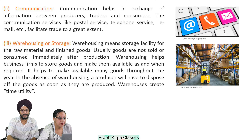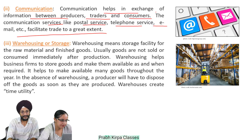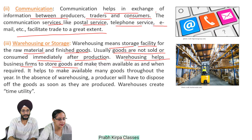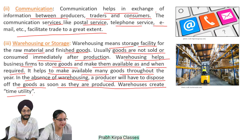Number 2, communication: communication helps in exchange of information between producers, traders, and consumers. The communication services like postal service, telephone service, email, etc. facilitate trade to a great extent. Number 3, warehousing or storage: warehousing means storage facility for raw material and finished goods. Usually goods are not sold or consumed immediately after production. Warehousing helps business firms to store goods and make them available as and when required. It helps to make many goods available throughout the year. In the absence of warehousing, a producer would have to dispose of goods as soon as they are produced. Warehouses create time utility.